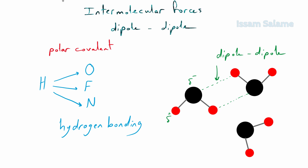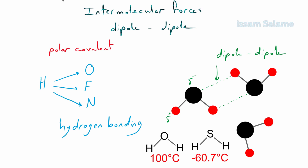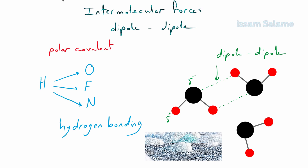Hydrogen bonding is very strong because the hydrogen atom is very small and has only one electron. When that electron is attracted toward oxygen, it leaves hydrogen's positive nucleus exposed to the unshared pair of electrons of those electronegative elements. This hydrogen bonding is responsible for some unique properties of water, like its high boiling point of 100°C compared to hydrogen sulfide at around -60°C.